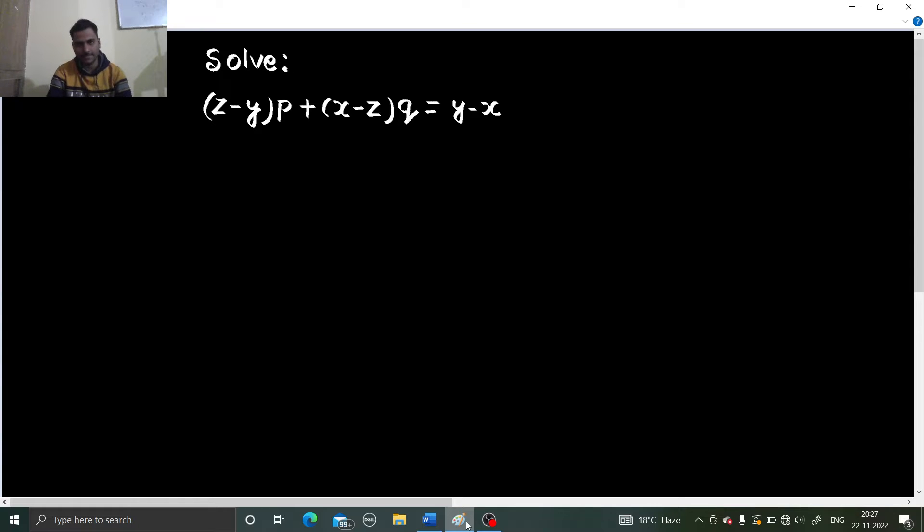We will use Lagrange's method to solve this problem. So what is Lagrange's method basic form? This is small p but you can say like this. So the form is Pp plus Qq equals to R. Now P, Q and R can be functions of x, y and z.